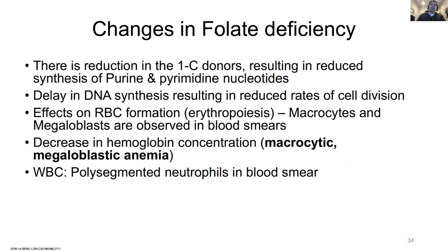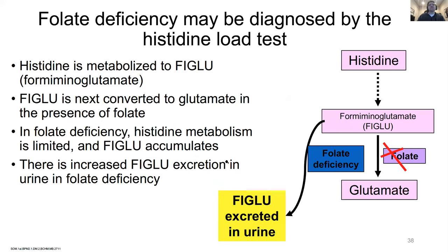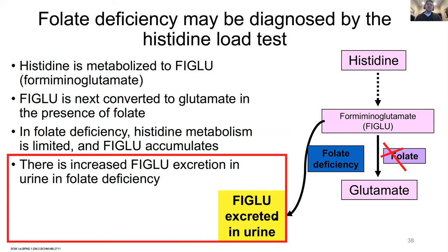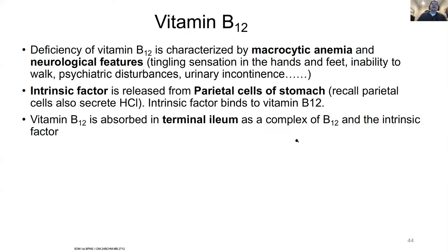Folate deficiency - the first thing you should think of is pregnant moms and neural tube defects. This is our first cause of macrocytic megaloblastic anemia, again with polysegmented neutrophils. If you look in the urine for a folate deficiency, you want to look for the precursor FIGLU. If you don't have folate, you can't convert FIGLU to glutamate, so you can see FIGLU in the urine with a folate deficiency.